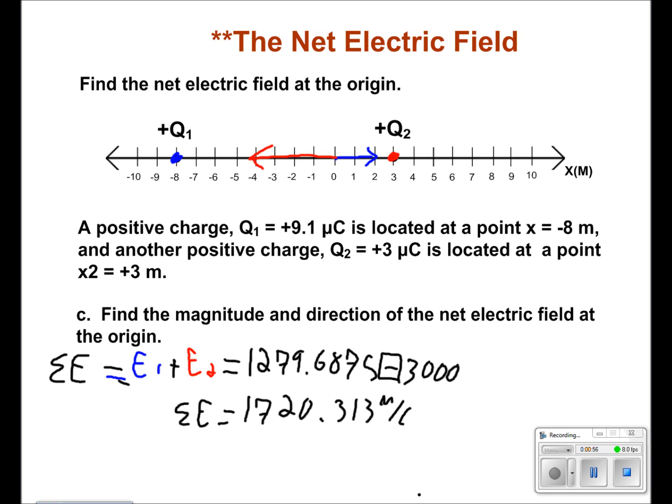Because it's mostly negative and E2 is larger, this is 1720.313 to the left.